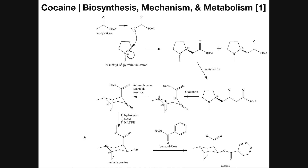If you ever look up cocaine on Wikipedia or some other site, they'll usually give a scientific name: benzoyl methyl ecgonine. This is just methyl ecgonine, so we're going to have to attach a benzoyl group — that's the very last step in the synthesis. Benzoyl-CoA comes in to transfer the benzoyl group onto the oxygen of methyl ecgonine, giving an esterification to this benzoyl group, and the final product is benzoyl methyl ecgonine, or cocaine.